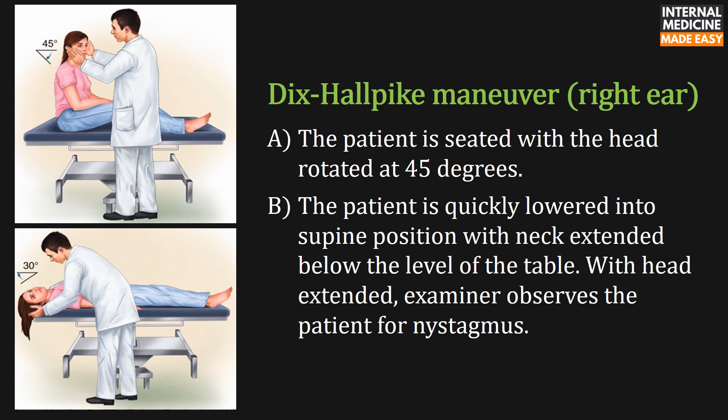These images demonstrate how to perform the Dix-Hallpike maneuver for the right ear. The patient is first seated with the head rotated at 45 degrees. Then the patient is quickly lowered into supine position with the neck extended below the level of the table. With the head extended, the examiner observes the patient for nystagmus.